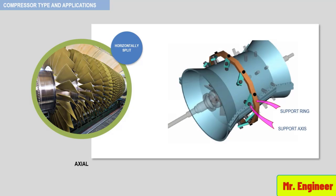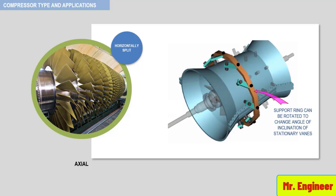In general, the stationary vane arrangements are guided by supporting rings for variable flow requirements. On rotating the supporting rings, the angle of inclination of the stationary vanes can be changed. This is used to change the performance parameters when required. The following illustration gives a clearer view of the stationary vanes changing the angle of inclination simply by rotating the supporting rings.